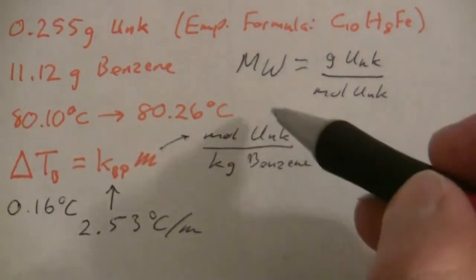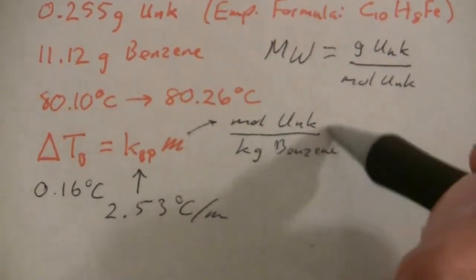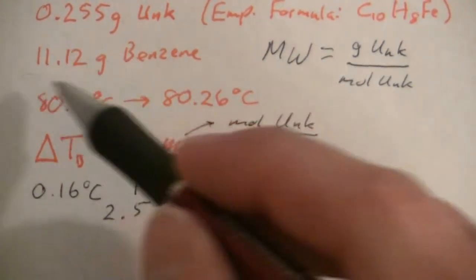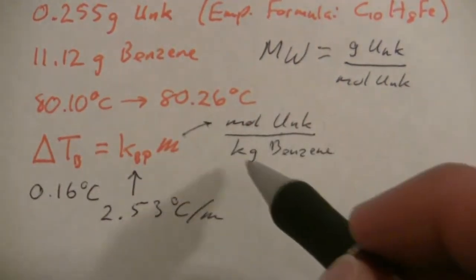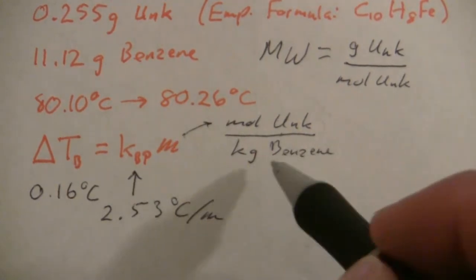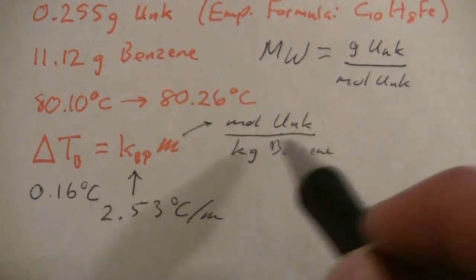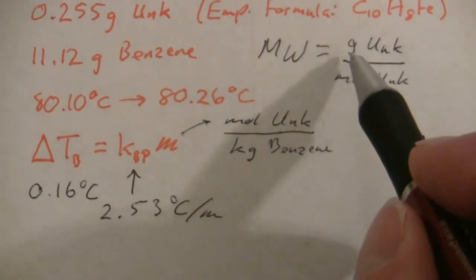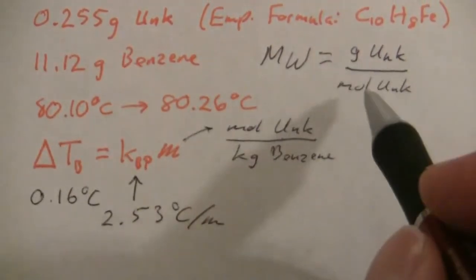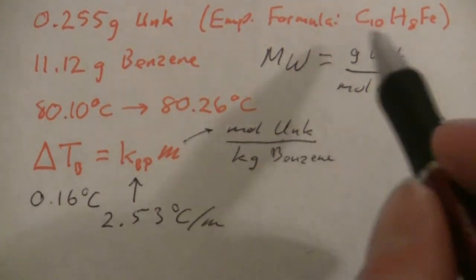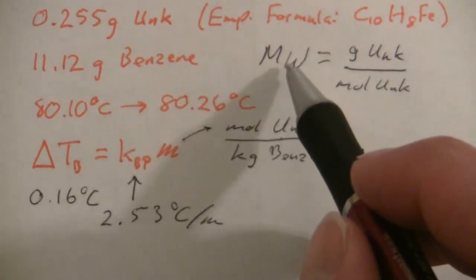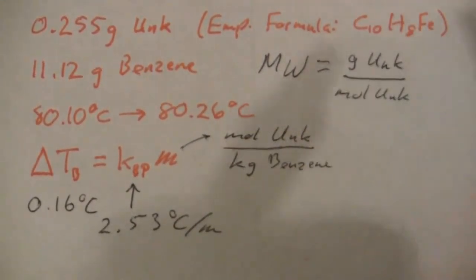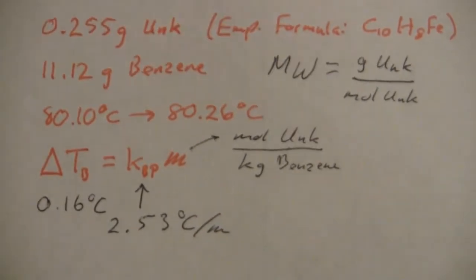So what I'm going to need to do is I can find the moles of the unknown, because I know how much solvent I have, so I can cancel that benzene out from the bottom, find the moles of the unknown, and then I have the mass of the unknown divided by the moles of the unknown, and that will give me the molar mass which I will then use to compare with the empirical formula to find out what the molecular formula is.